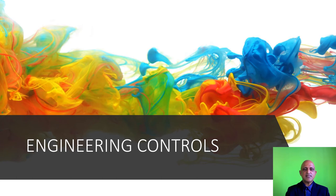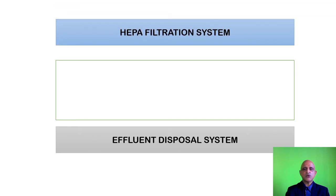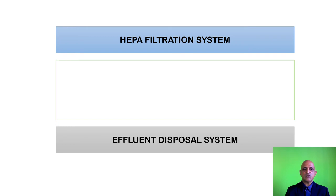The third control is the engineering control. To understand engineering controls you need a basic understanding of your laboratory layout. Consider a conceptual laboratory which is simply an enclosed space. If management decides to upgrade it to a BSL-2 or BSL-3 laboratory, the first thing to address is the effluent disposal system, responsible for disposing of all waste and liquids from the facility. Then you look at the HEPA filtration system, which requires designing two additional floors to house the HEPA air filtration system and the effluent disposal system — essentially converting the lab into a three-storey facility.